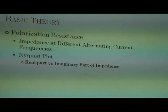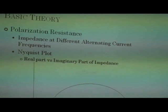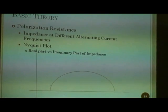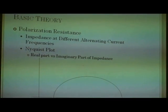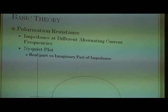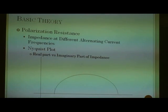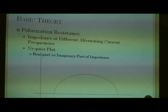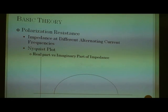The polarization resistance involves the linear variation of potential within the corroding system in the vicinity of the corrosion potential, enabling determination of the corrosion current. When the impedance is measured for different frequencies, the real parts and imaginary parts are recorded and plotted against each other — the imaginary part on the vertical axis and the real part on the horizontal. When plotted, an arc is generated, and the polarization resistance is the diameter of that arc. This is the basis of the traditional EIS method.